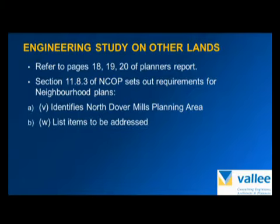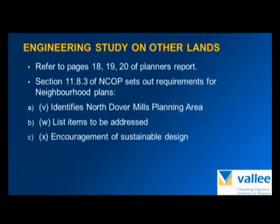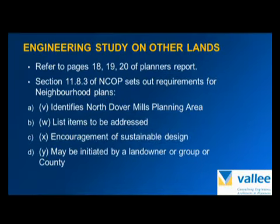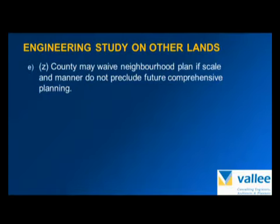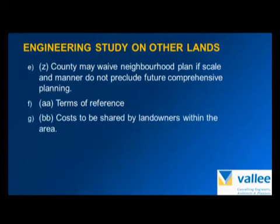Section B has a list of items to be addressed. C talks about encouragement of sustainable design. D talks of who can initiate a neighbourhood plan. It gets down to E, which says that the county can actually waive a neighbourhood plan, and although we haven't applied for that, we think that may actually be appropriate here. F talks about the terms of reference, and G talks about the cost to be shared by landowners within the area. In this case, our client is the only active developer in the area, so he is paying all the costs, even though section G says costs are to be shared by landowners.